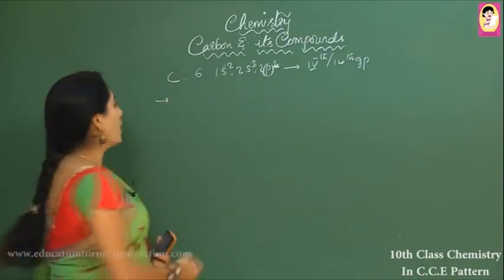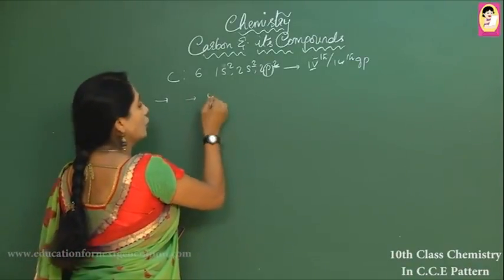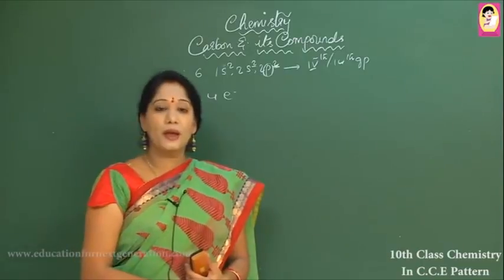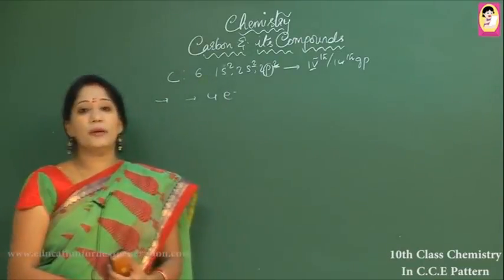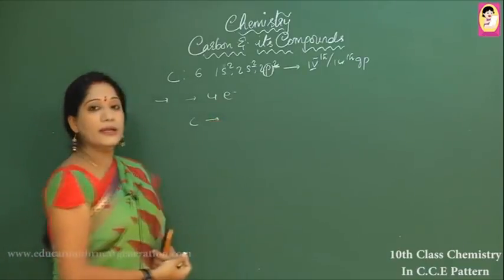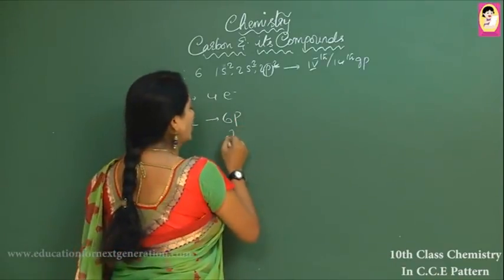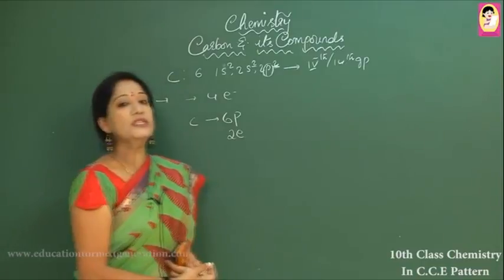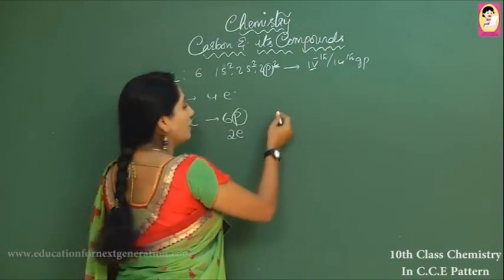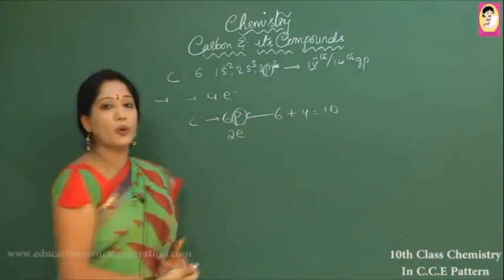Carbon requires four electrons to gain stability. It can either donate four electrons or accept four electrons to get stabilized. However, the nuclear charge does not permit carbon to form an ionic bond. If carbon donates four electrons, the six protons would be left holding only two electrons, which is impossible because the nuclear charge becomes very high.